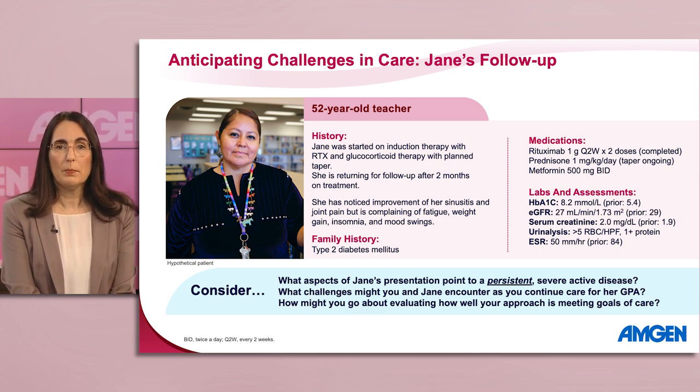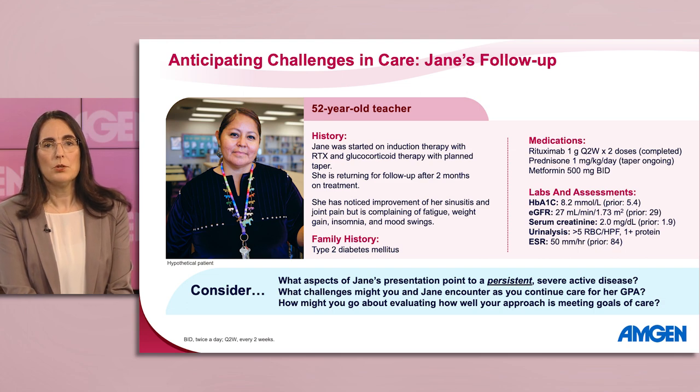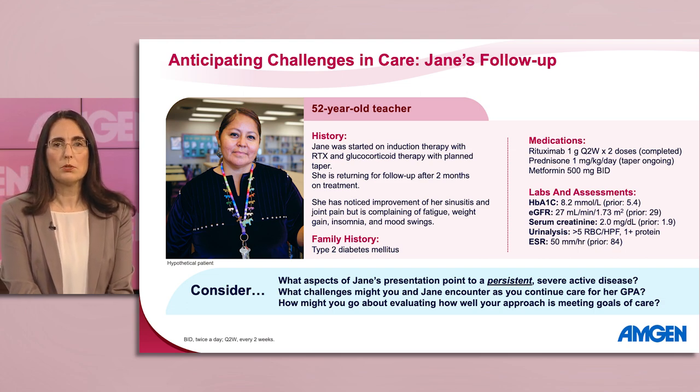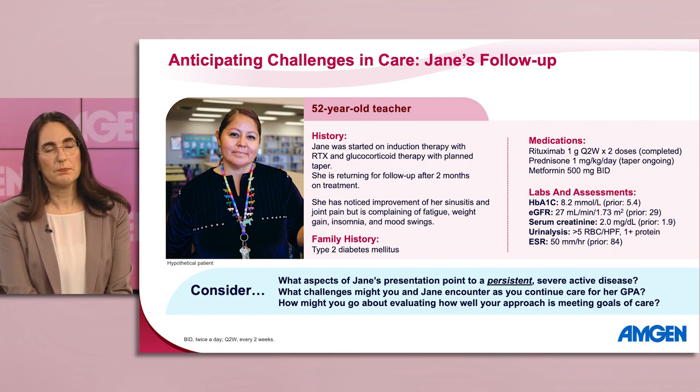Labs show elevated hemoglobin A1c to 8.2, stable eGFR, and urine analysis with continued hematuria and proteinuria, though her ESR has improved somewhat. Consider what aspects of Jane's presentation point to a persistent severe active disease, what challenges you and Jane may encounter as you continue to care for her GPA, and how you might go about evaluating how well your approach is meeting goals of care.